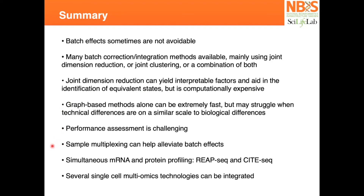Sample multiplexing is the best way to avoid batch differences. In some cases, you can also use RNA profiling or hashing methods like SiteSeq and ReapSeq to avoid batches.